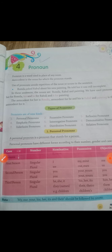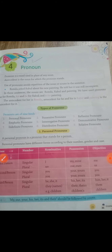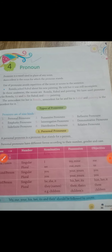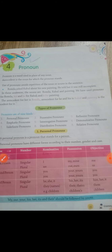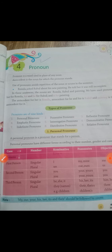Personal pronouns have different forms. The personal pronoun table has been given with nominative case, possessive case, and objective case — these three cases. If you look at the first person, nominative case: I; possessive case: my; objective case: me.